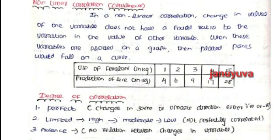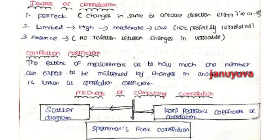Next, based on degree type: Perfect, Limited, and Absence. Perfect correlation means both variables move in the same or opposite direction — either positive or negative. Limited correlation means the variables are moderately or low correlated — not perfectly correlated. Absence means no relation between changes in the variables.